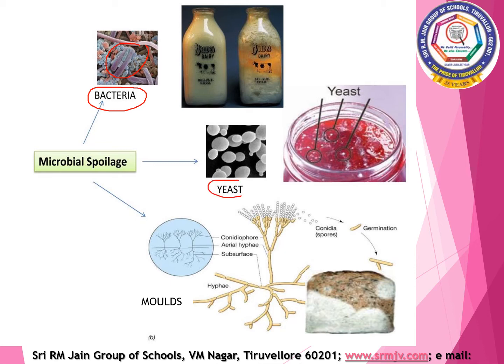Yeast are tiny organisms which can be seen only with the help of a microscope. They multiply very fast and cause fermentation. Food items spoiled by yeast are fruit juices, honey, jams and jellies.